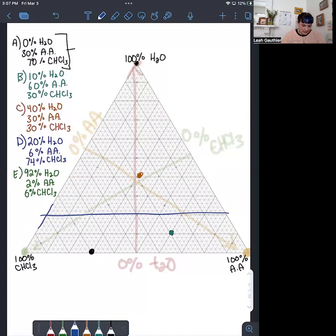Lastly, we have 92% water, 2% acetic acid, and 6% chloroform. So 92% water, we're all the way up here. 2% acetic acid, so that's there. And 6% chloroform, so we are right up there.